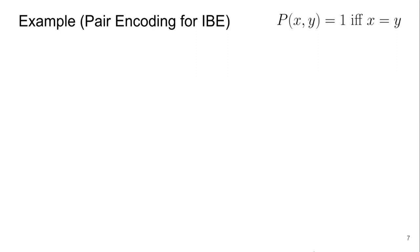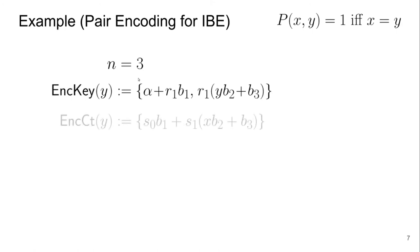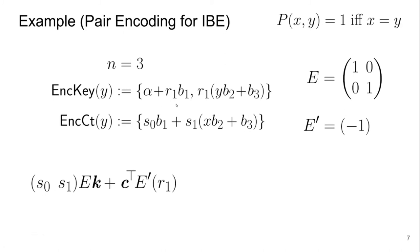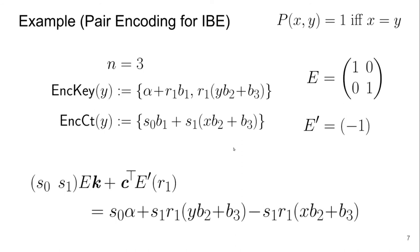Let's see an example. This is probably the simplest pair encoding scheme — for the identity-based encryption predicate, where the predicate between x and y holds if x equals y. In this case n equals 3, so the first algorithm outputs 3. The key encoding has two polynomials, and the ciphertext encoding has one. The matrices allow reconstructability: you can check that multiplying s0 by one polynomial and s1 by another and subtracting the third, when x equals y those terms cancel and you end up with s0 times alpha.